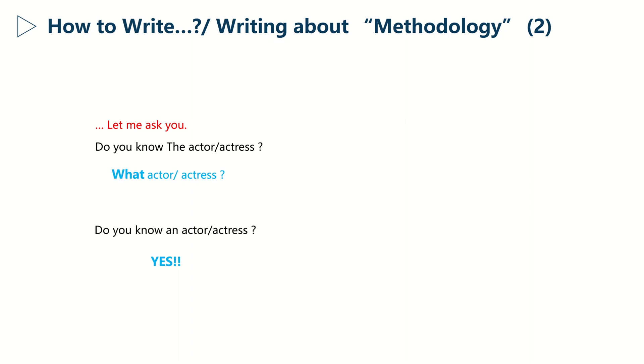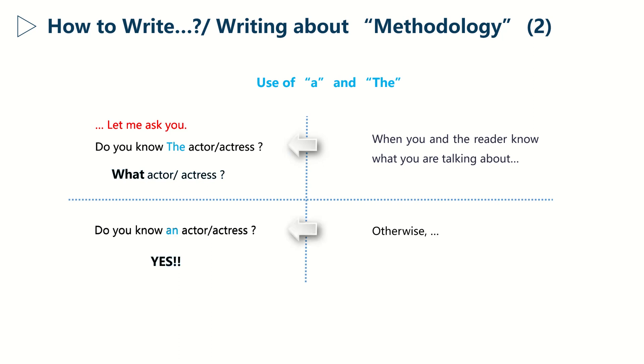So this is how it works. You should ordinarily use 'the' when you and the reader know what you're talking about. Otherwise you should use 'an' or 'a'. Trust me, this simple rule is the source of many mistakes in research writing. Pay attention to that.